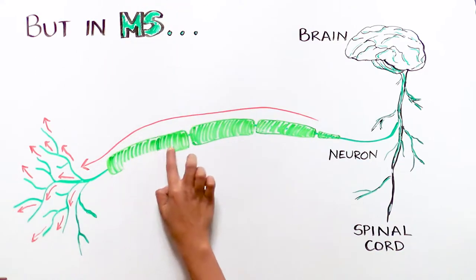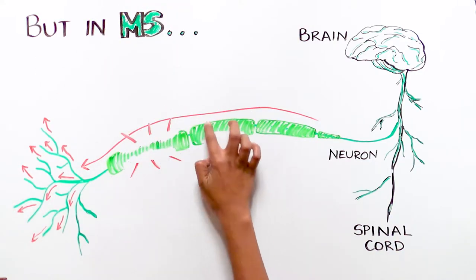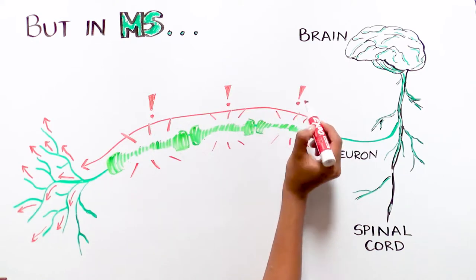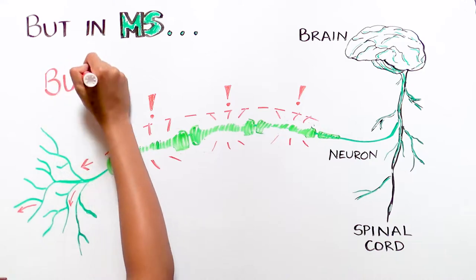In patients with MS, the myelin insulation around the neurons becomes damaged, so the signals from your brain to the rest of the body go haywire. Why does this happen?